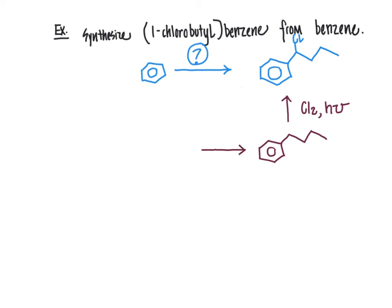Continuing the retrosynthetic approach, we ask how to get butylbenzene. You might consider a Friedel-Crafts alkylation to attach the four-carbon chain directly, but the problem is this is a primary carbon, and you'd get a carbocation rearrangement yielding the wrong constitutional isomer. So we can't do that. Instead, we use the Wolff-Kishner reduction — or alternatively the Clemmensen reduction — to convert a ketone to the alkyl chain.